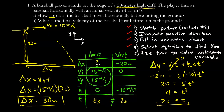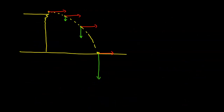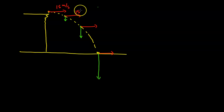Now for question two: what is the final velocity of the baseball just before it hits the ground? Just before impact, the ball has both a horizontal velocity and a vertical velocity. Since these are vectors, we can't simply add them — we need to use the Pythagorean theorem. Horizontally, the velocity remains 15 meters per second.